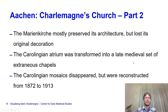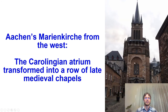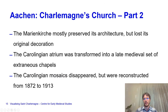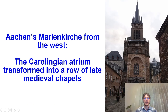The Carolingian atrium was transformed into a late medieval set of extraneous chapels. Previously it was a portico space, but now you can see several buildings in a row—all late medieval chapels. And here you have the mosaics.